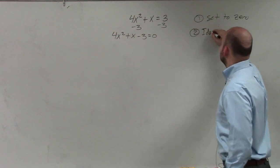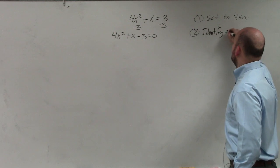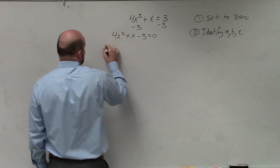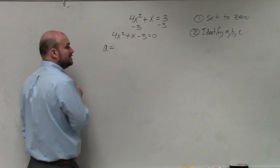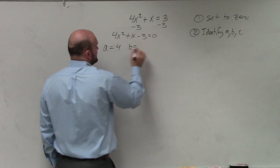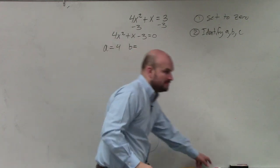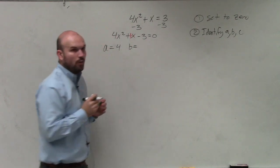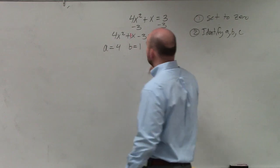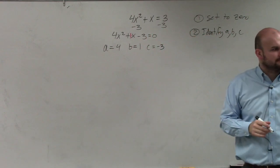Step number two, identify a, b, and c. So in this case, a, remember, is the coefficient of my quadratic term, which is 4. b is the coefficient of my linear term, which is 1. And c is equal to negative 3, which is my constant.